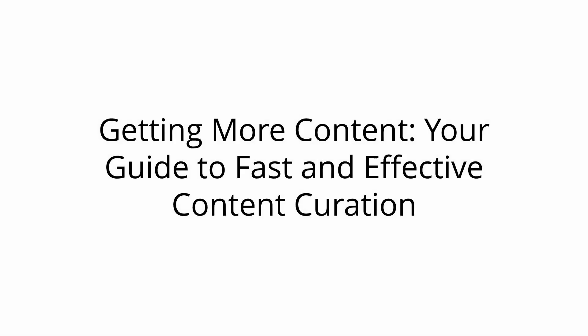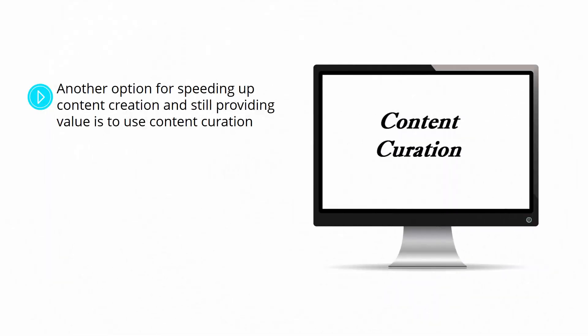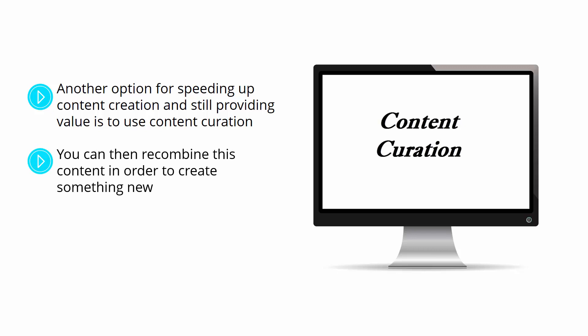Another option for speeding up content creation while still providing value is to use content curation. The essential idea behind content curation is simple: you are making blog posts and pages that are entirely comprised of other content you have found around the web. You can then recombine this content to create something new, along with adding your own commentary and context to make the post more interesting and to add your own value.